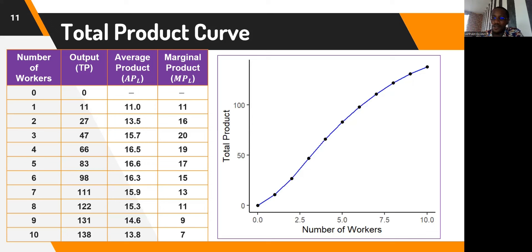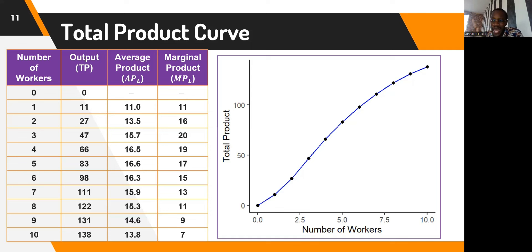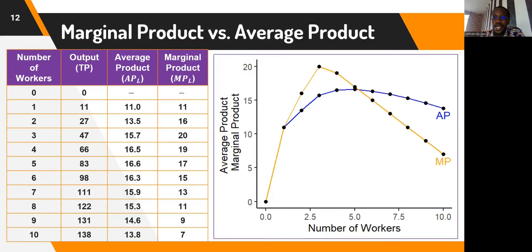When we plot the total product curve, it increases — at the very initial stages through about the second and third worker, total product was increasing at an increasing rate. From the fourth worker onwards, total product continues to increase but at a decreasing rate. There are instances where total product begins to fall — that is when marginal product becomes negative. For this study, we consider a situation where total product, average product, and marginal product are all positive.